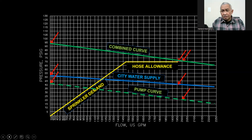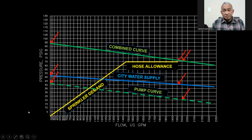This covers our topic for today: comparing the city water demand and the fire sprinkler system demand to the available city water supply. I would like to invite you to watch our next video tutorials at the H-Machicon Mechanical Engineering Channel on YouTube. Thank you. Bye now.